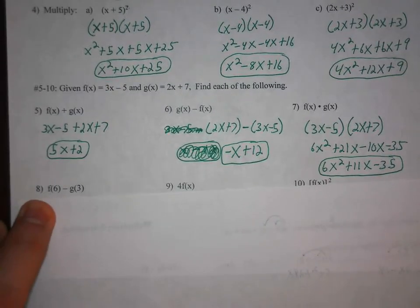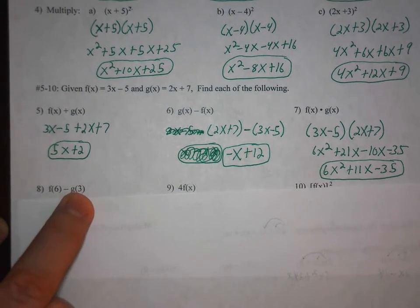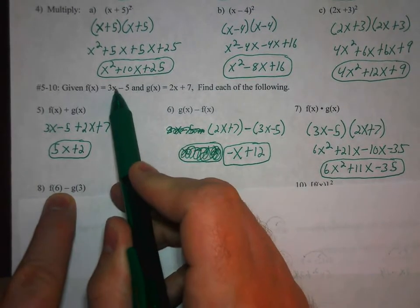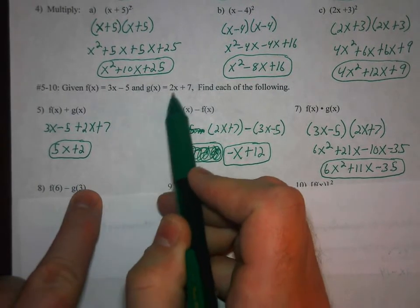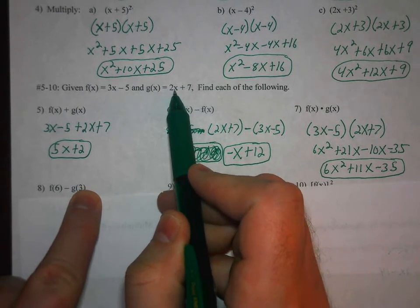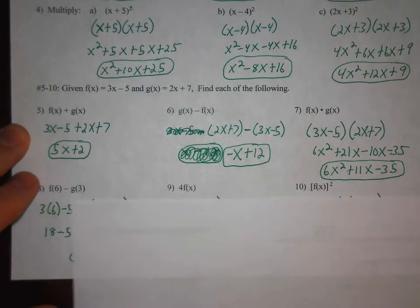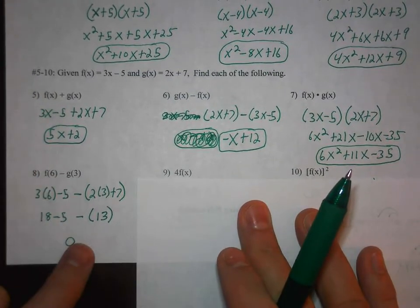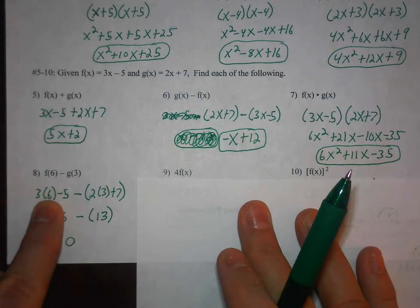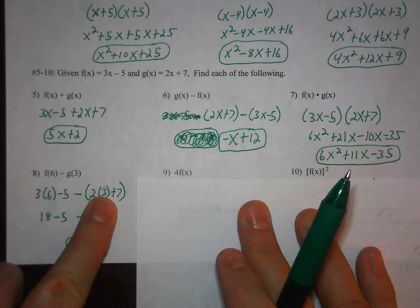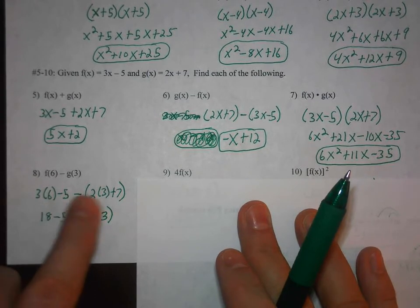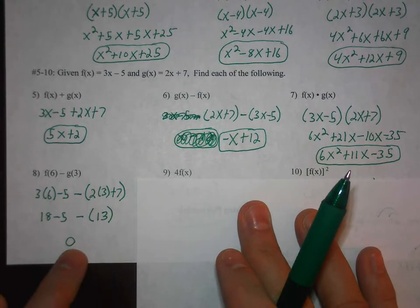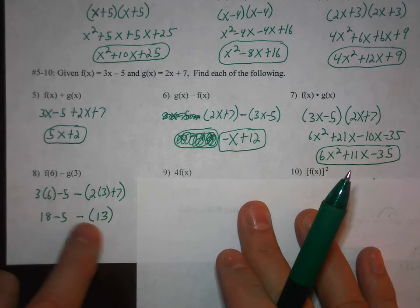Notice in number 8, we have f of 6 minus g of 3. So that means we know we're going to put 6 into the f function. And we're going to put 3 into the g function. So now, because we substituted values in for x, we're going to get a number for our answer. So substituting 6 into the f and then 3 into the g gives you 0. So essentially, 13 minus 13.